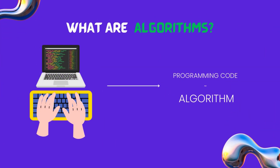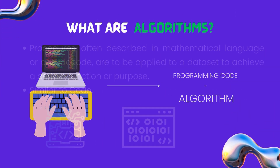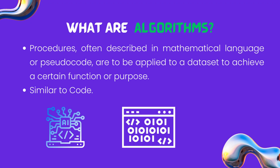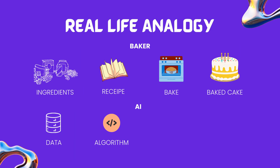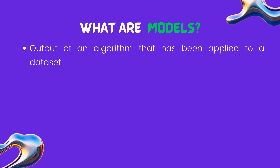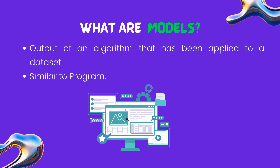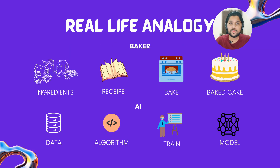You can compare these algorithms with programming code. Algorithms are applied to a dataset to achieve a certain function or purpose and get the desired output. That output is known as an AI model — the output of an algorithm that has been applied to a dataset, comparable to a software program. To make these AI models, we need to train them using relevant data, and the trained model can then be used to make predictions or decisions in new and similar situations to solve cognitive tasks.